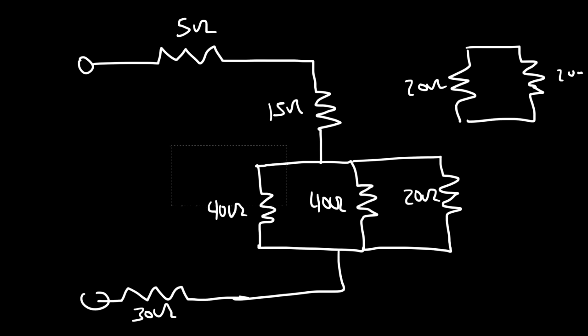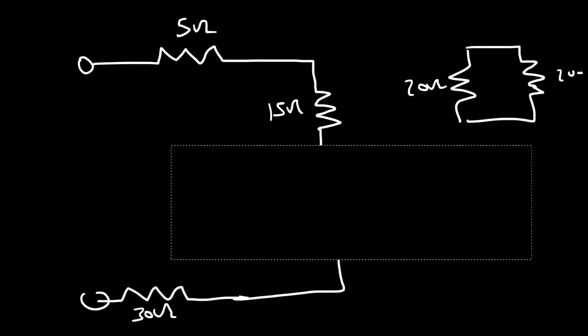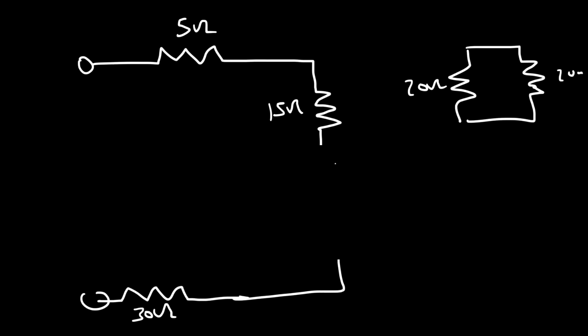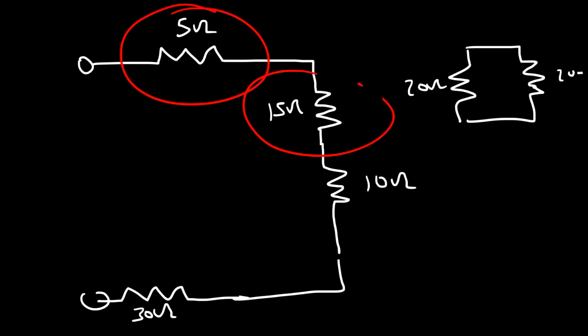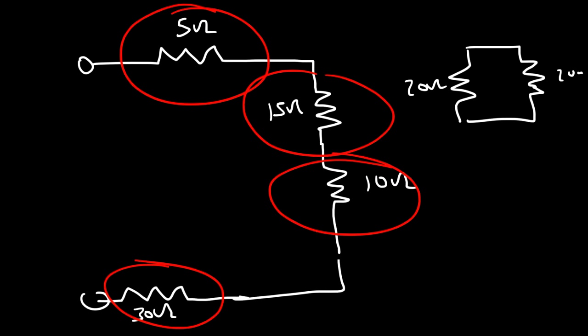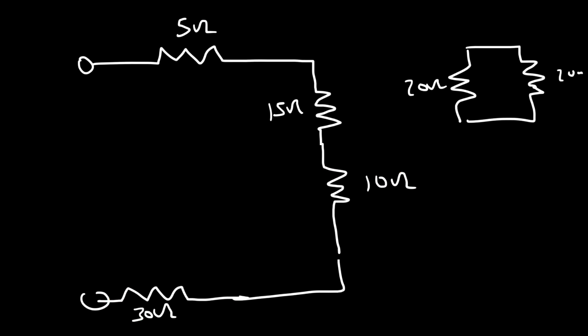I can replace this entire circuit with a 10 ohm resistor. Now the remaining four resistors are all in series — there's only one path for the current to flow. So it's going to be 5 plus 15, which is 20, plus 10, plus 30. The equivalent resistance for this circuit is 60 ohms.